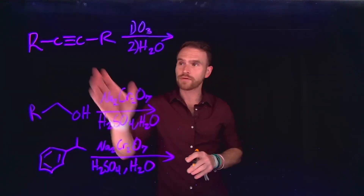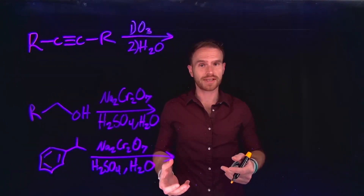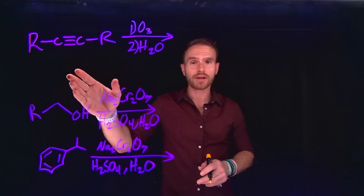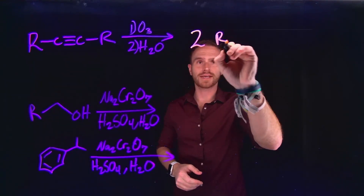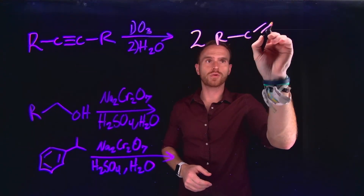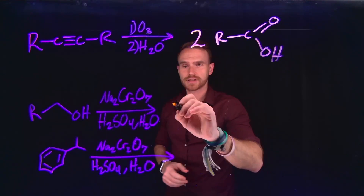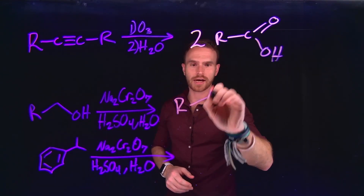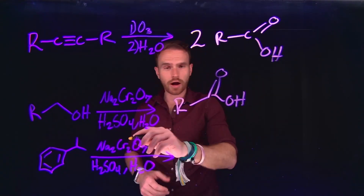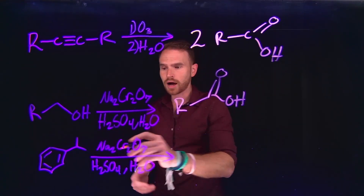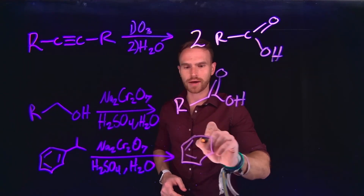There are three reactions you would have previously learned for synthesizing carboxylic acids. The first is ozonolysis, or oxidative cleavage, of an alkyne to form two identical carboxylic acids. Additionally, strong oxidizing agents can oxidize primary alcohols into carboxylic acids. Similarly, strong oxidizing agents can oxidize alkyl chains off benzene to form benzoic acids.